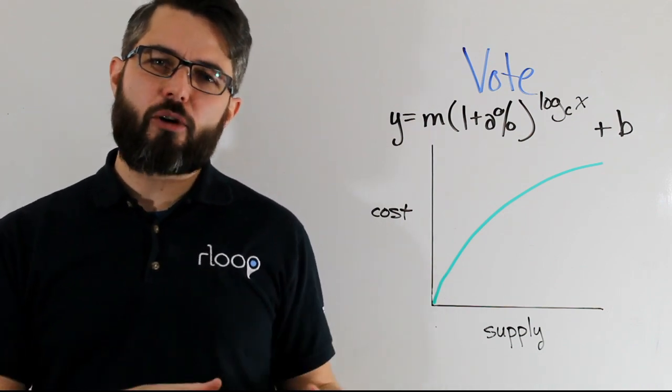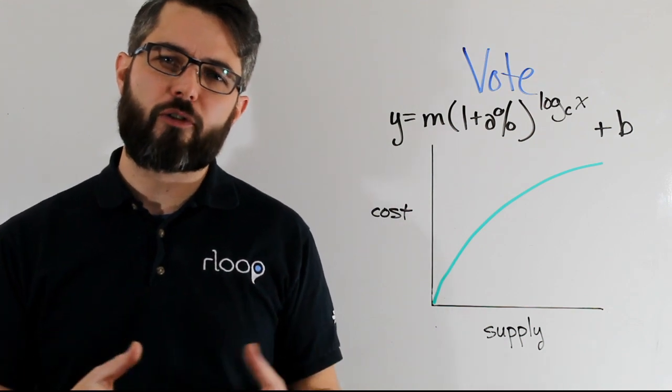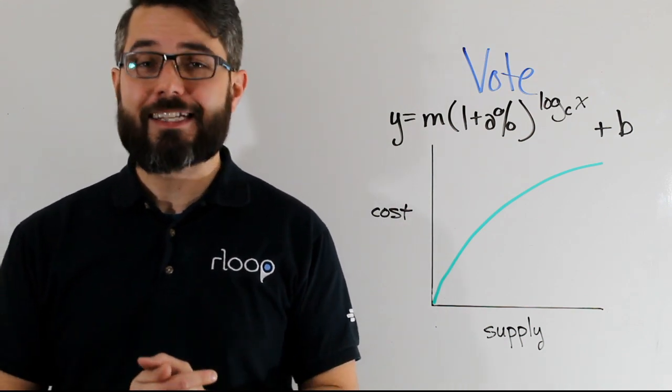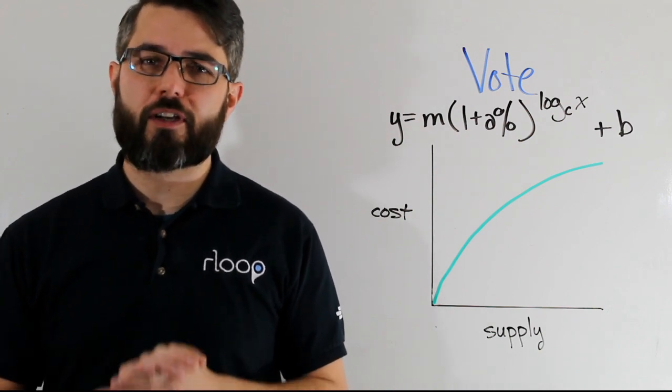So in the last video we talked about how the community of rloop token holders can signal their support for a project as well as predict its success by staking their rloop tokens to a project specific bonding curve.